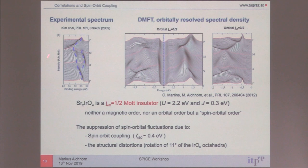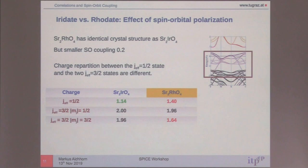The calculations are at room temperature. This is the ARPES measurement and this is the calculation. What happens is that correlations polarize this from 1.1 to 1.0 — the J3/2 get completely filled — so you get this one-band Mott insulator. Now comes the difference to the rhodate.